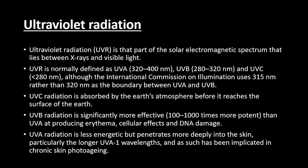On Earth, we can witness ultraviolet A and ultraviolet B rays, but ultraviolet C is filtered by the ozone layer in the Earth's atmosphere. As far as the two radiations are concerned, UVB radiation is significantly more effective — 100 to 1000 times more potent than UVA — in producing erythema, cellular effects, and DNA damage. UVA radiations, although less energetic than UVB, tend to penetrate more deeply into the skin because of their longer wavelength.